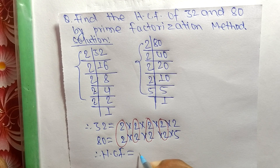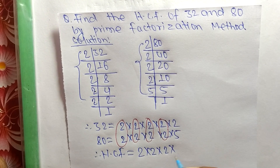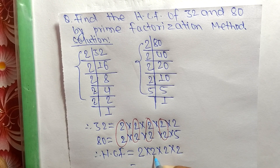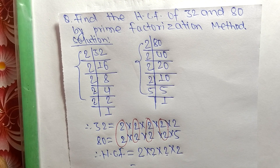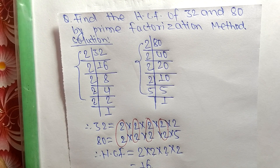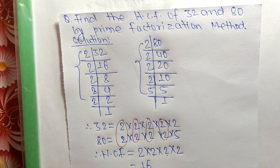The HCF is equal to the product of these common factors: 2 × 2 × 2 × 2. So 2 × 2 = 4, 4 × 2 = 8, and 8 × 2 = 16. Therefore, 16 is the HCF of 32 and 80. That's all for today — thanks for watching.